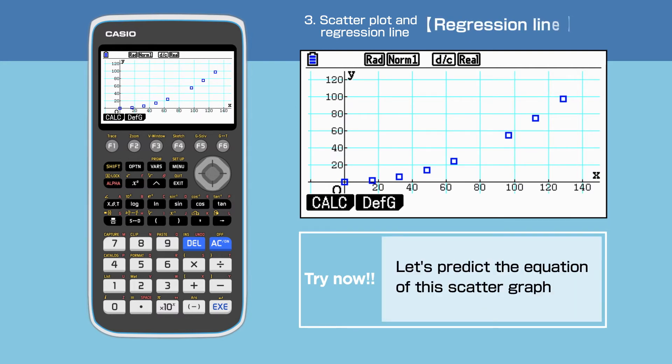Looking at the scatter plot, it shows a relatively strong linear correlation. So let's make an assumption of what the equation of the regression line might be.